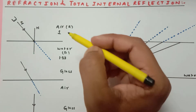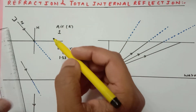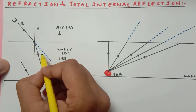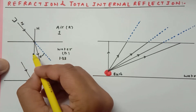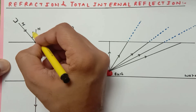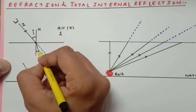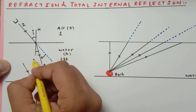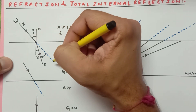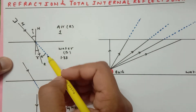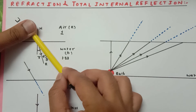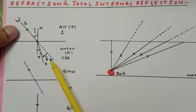Since the refractive index of water is more, it is the denser medium; air is the rarer medium. When a ray of light travels from a rarer medium into a denser medium, it bends towards the normal. This ray is called the refracted ray. The angle between the incident ray and the normal is the angle of incidence (i), the angle between the normal and the refracted ray is the angle of refraction (r), and the angle of deviation is represented by delta.